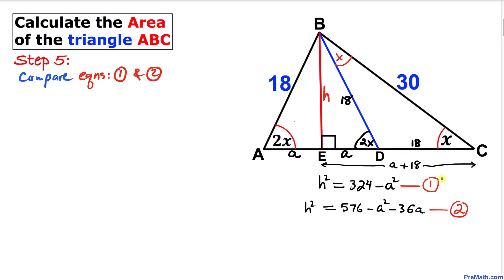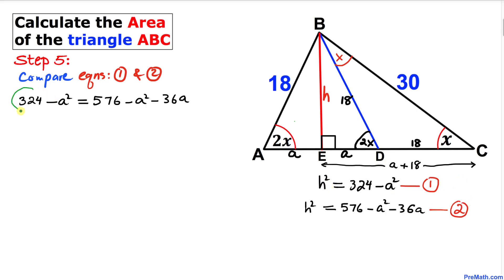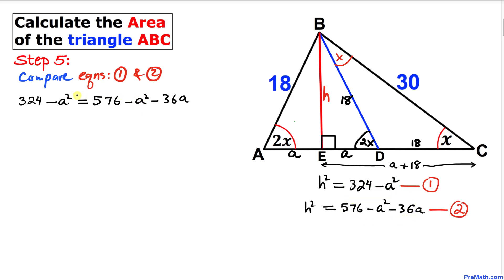Now let's compare equations one and two by equating their right-hand sides. We can see that −A² cancels on both sides.